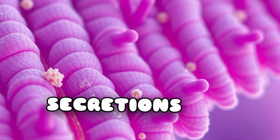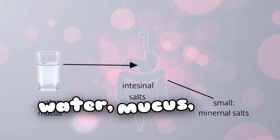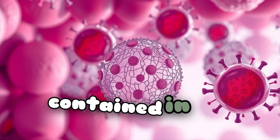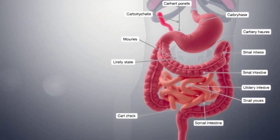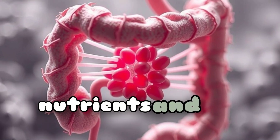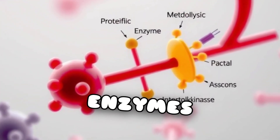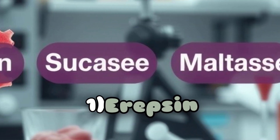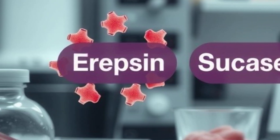The principal constituents of intestinal secretions are water, mucus, and mineral salts. Most of the digestive enzymes in the small intestine are contained in the enterocytes of the walls of the villi. Digestion of carbohydrate, protein, and fat is completed by direct contact between these nutrients and the microvilli and within the enterocytes. Intestinal enzymes include enterokinase and proteolytic enzymes such as erepsin, nucleases, sucrase, maltase, and lactase.